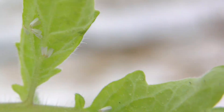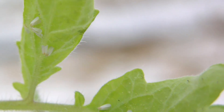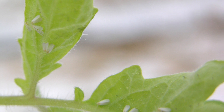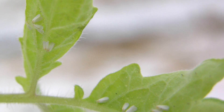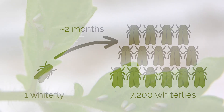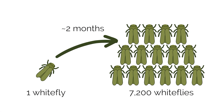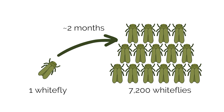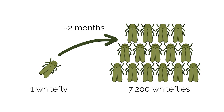Similarly, each mated whitefly female caught on a sticky trap can prevent over 7,000 more whitefly females from infesting the crop after two months or two generations.